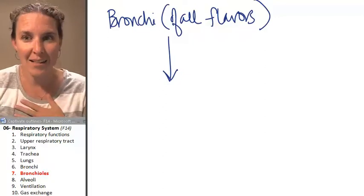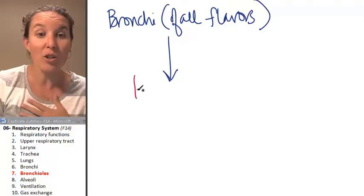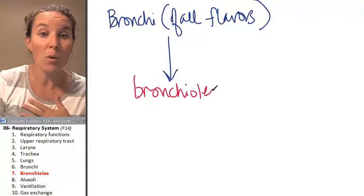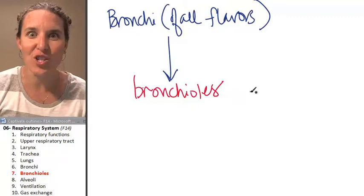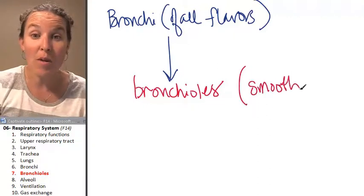The next layer, the next structure, does not have hyaline cartilage, and they are called bronchioles. Bronchioles have no cartilage. But you know what they do have? They are surrounded by smooth muscle.